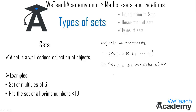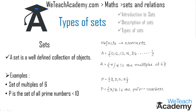For the next example, let P be the set of all prime numbers less than 10. The prime numbers less than 10 are 2, 3, 5, and 7. In set-builder form, we write this as: x such that x is a prime number and x is less than 10.